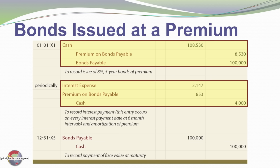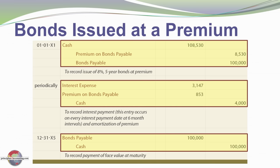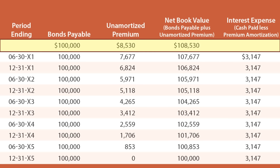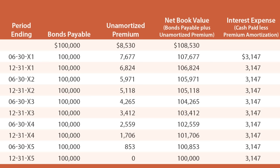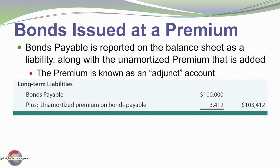That entry is repeated every six months for the five-year period so that by the end of five years the premium is fully amortized or zeroed out, and we repay the bond: credit cash $100,000, debit bonds payable $100,000. Here's a schedule: we start with a $100,000 bond and $8,530 premium, net book value $108,530. The first period reduces the premium by $853 to $7,677, net book value $107,677, with interest expense of $3,147. By period 10 (20X5) the premium is completely amortized and the bond has matured.